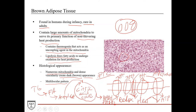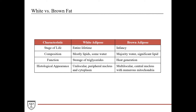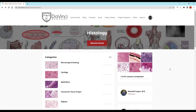This table sums up everything from the lecture. White adipose tissue is present your entire lifetime, whereas brown adipose tissue is present mainly during infancy. In terms of composition, white adipose tissue is mostly lipids with some water, corresponding to its function of storing triglycerides. Brown adipose tissue is mostly water with a significant lipid component, corresponding to its function of heat generation. Histologically, white adipose is unilocular with a peripherally located nucleus and cytoplasm, while brown adipose is multilocular with a central nucleus and numerous mitochondria.